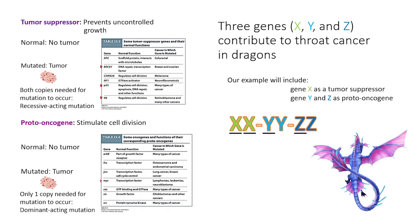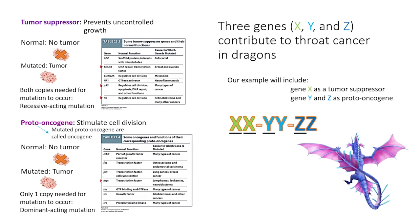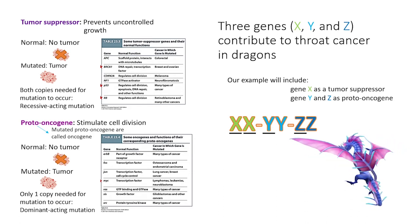Proto-oncogenes promote cell division of cells that are healthy; therefore, no tumors form. If mutated, tumors will form — mutated proto-oncogenes are called oncogenes. They are dominant-acting mutations, so only one allele needs to be mutated for a tumor to form.